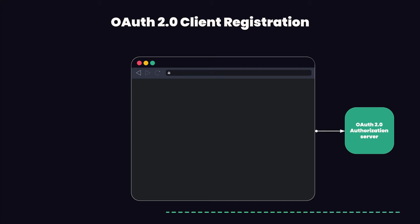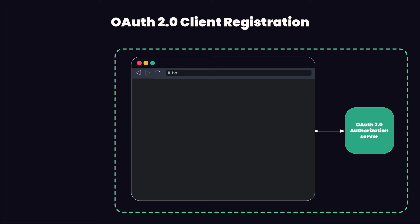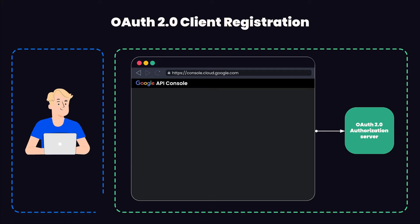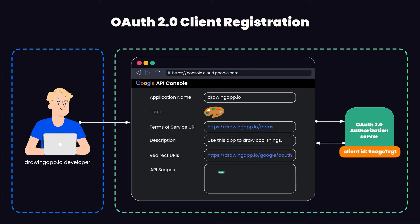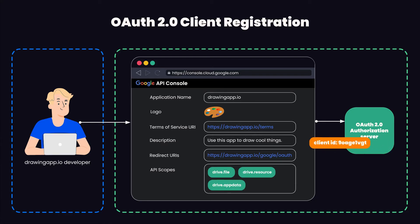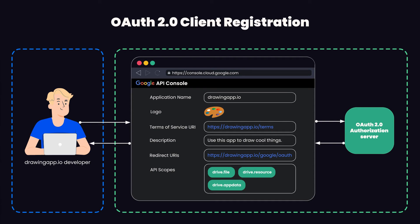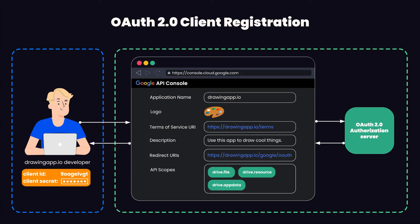Before any third-party application — in this case our drawing application — can make use of OAuth, it first needs to be registered with the authorization server. This usually boils down to a one-time effort of the drawing app developer registering his application with Google by filling out a form. When the developer registers the app, he gets a client ID that uniquely identifies his application to the authorization server. If his third-party application can keep data secret, then in OAuth 2.0 terms the client is confidential and also gets client credentials to authenticate against the authorization server. In the simplest case, the client credential is just a password called a client secret. Think of the client ID as a unique username and the client secret as a password.